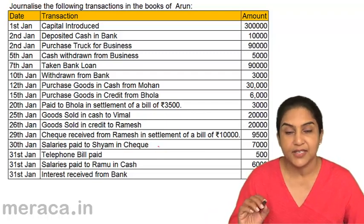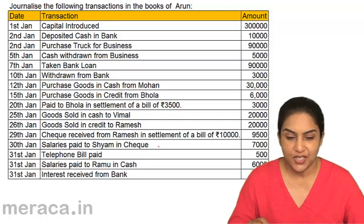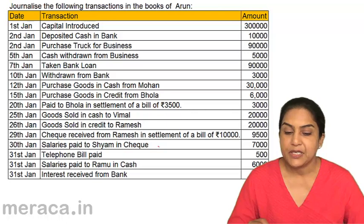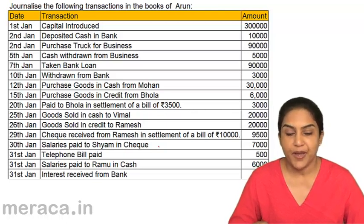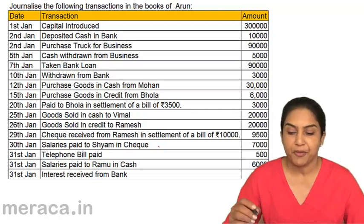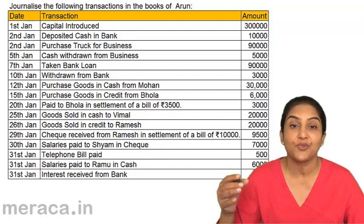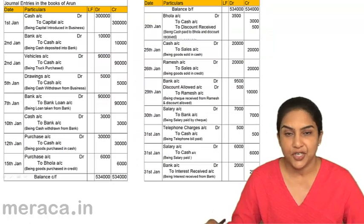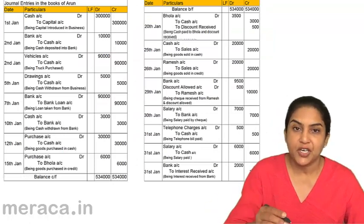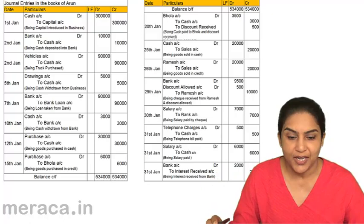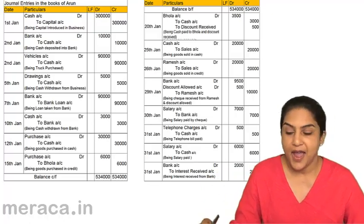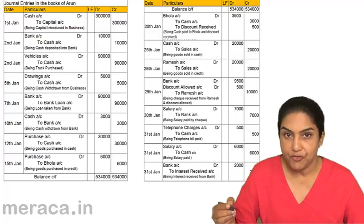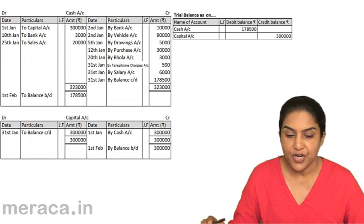Let us continue with our example. When we first prepared the journal, these were the transactions: capital introduced, cash was deposited into bank, truck was purchased, withdrawn from bank, and so on. Based on this, we had prepared a journal, and from the journal, we had posted to the ledger. We will now look at the ledger accounts from which we are going to draw the trial balance.